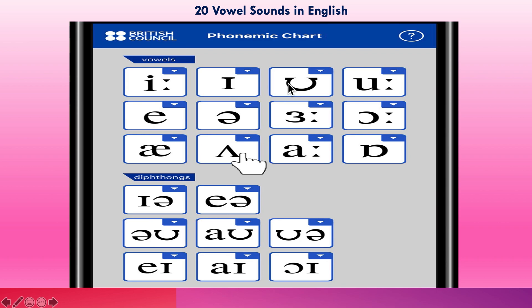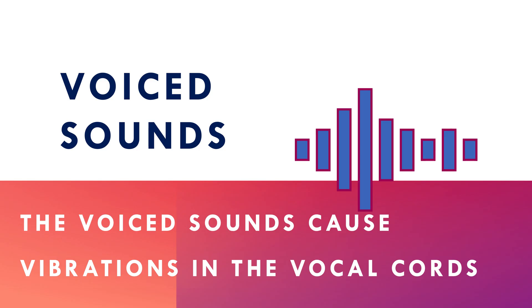The 20 vowel sounds are further divided into two parts: the first one is monophthongs, and the second one is diphthongs. We will talk about them in detail in our next lesson.